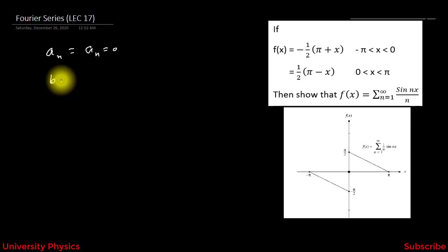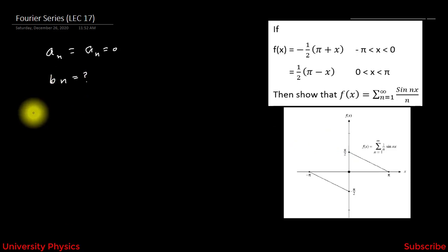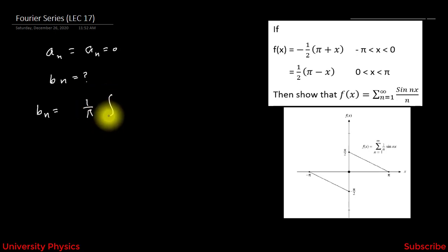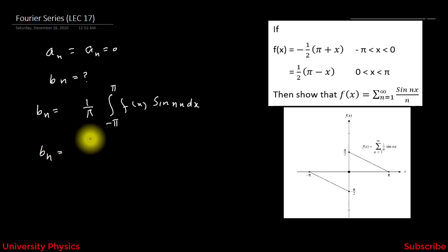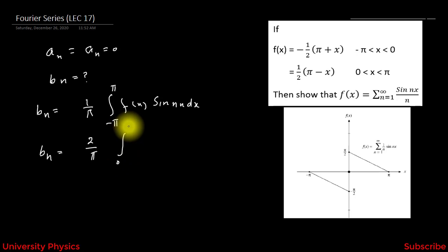Since the function is odd, we only need to find the value of bₙ. If we draw this function as a graph, we get the corresponding graph. The formula for bₙ is: bₙ = (1/π) × integral from -π to +π of f(x) sin(nx) dx. For an odd function, this simplifies to bₙ = (2/π) × integral from 0 to π of f(x) sin(nx) dx.